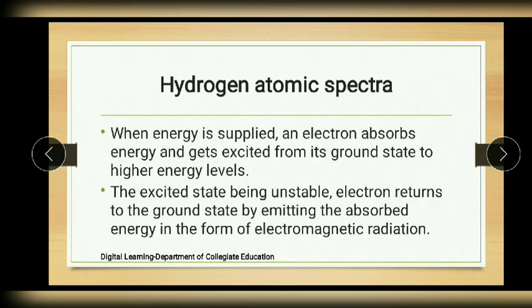Let us understand the emission spectrum of hydrogen. When energy is supplied, an electron absorbs energy and gets excited from its ground state to higher energy levels. The excited state is unstable, so the electron returns to the ground state by emitting the absorbed energy in the form of electromagnetic radiation.